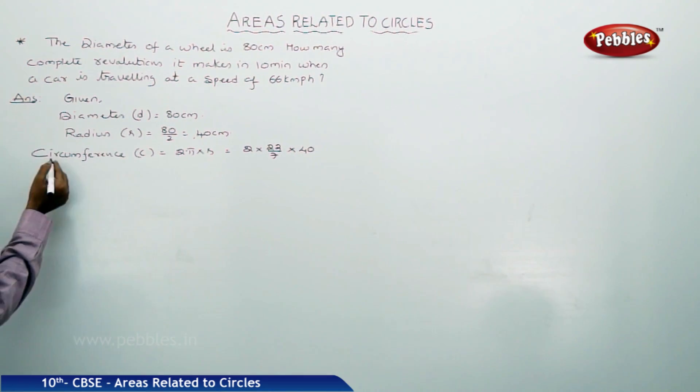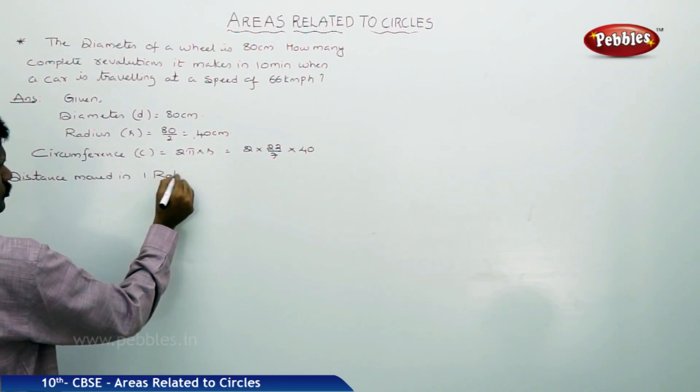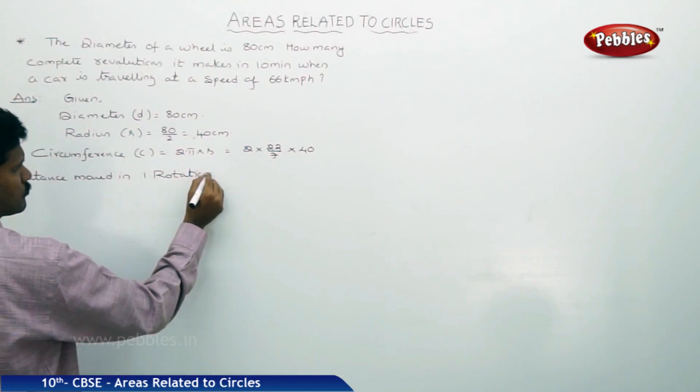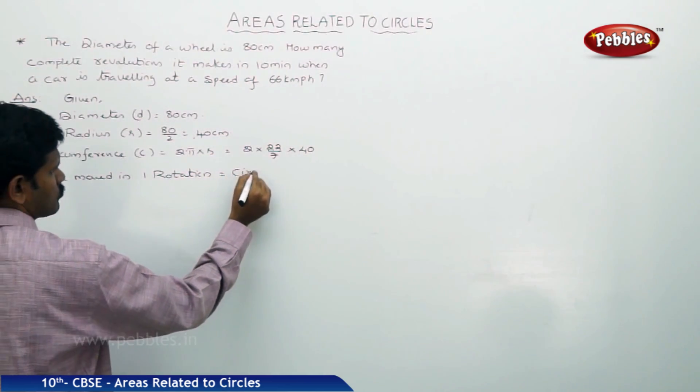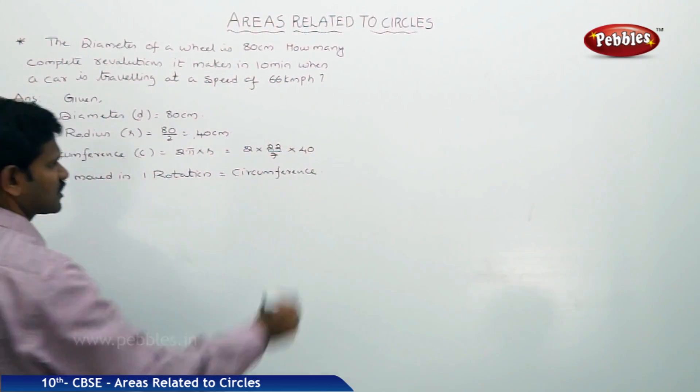Now circumference means distance moved in 1 rotation. Distance moved in 1 rotation is equal to circumference.